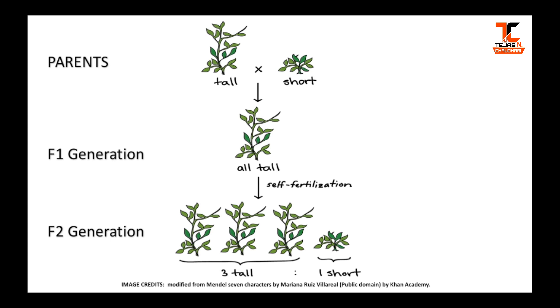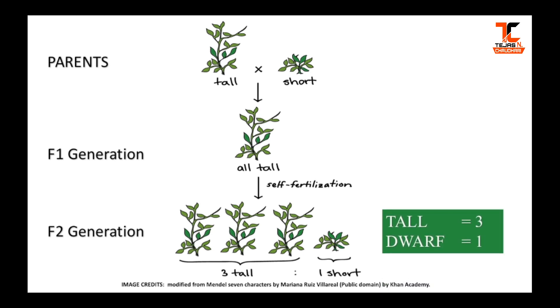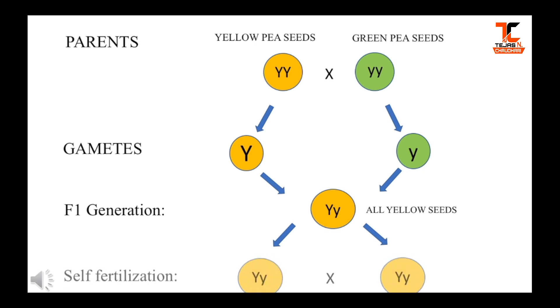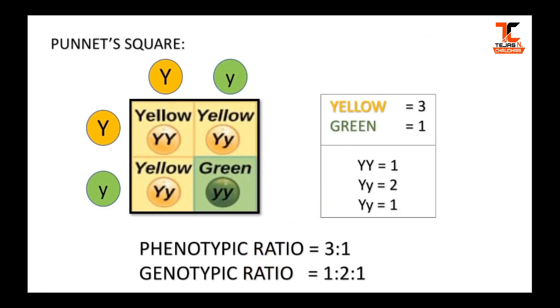After performing F1 self-fertilization, he got three tall plants and one short plant, which gives us the F2 generation phenotypic ratio of 3:1. Similarly, when a yellow pea plant was crossed with a green pea plant, the result was the same — all yellow-seeded plants were observed in the F1 generation, and in F2 generation the phenotypic ratio was again 3:1, meaning three yellow-seeded plants to one green-seeded plant. The genotypic ratio was 1:2:1.